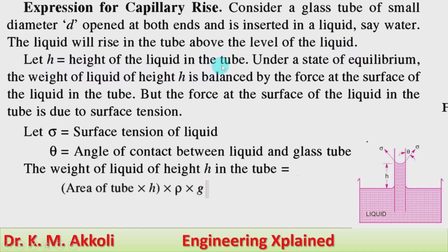Let h equal to the height of the liquid in the tube under a state of equilibrium. At equilibrium, the weight of the liquid of height h is balanced by the force at the surface of the liquid in the tube. The force at the surface of the liquid is the surface tension, sigma.